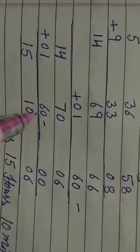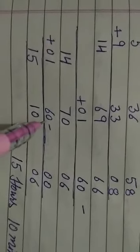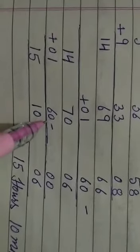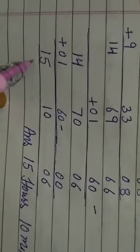When minutes are more than 60, we will subtract 60 from the minutes and add 1 to the hours. By subtracting 60 from 70, you get 10, and 14 plus 1 gives you 15. Now your answer is 15 hours 10 minutes 6 seconds. This is the answer to your question.